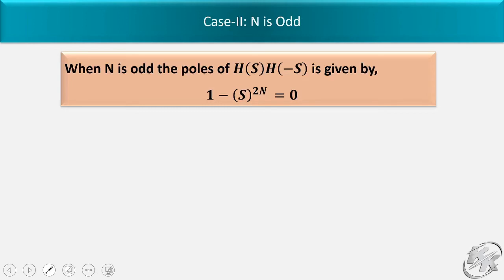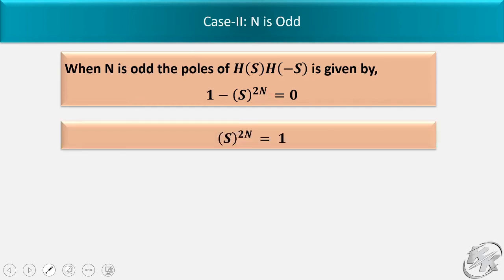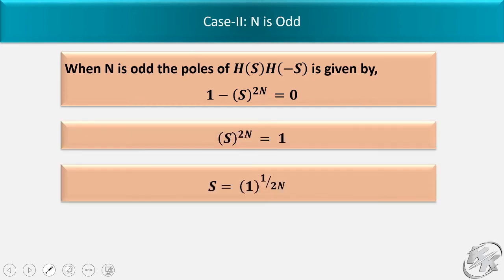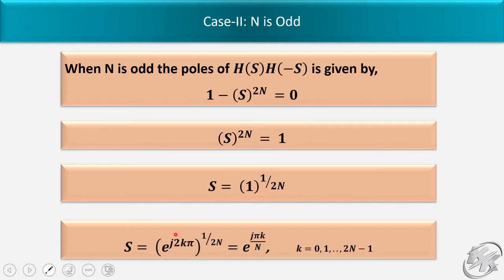Now let's see Case 2 for n is odd. When n is odd, the poles of H(s)·H(-s) are given by 1 minus s^(2n) equal to 0, so s^(2n) equal to 1, and s equal to 1^(1/2n). Now 1 equals e^(j2kπ), so putting that value in the formula gives s equal to e^(jπk/n), where k equals 0, 1, up to 2n minus 1.